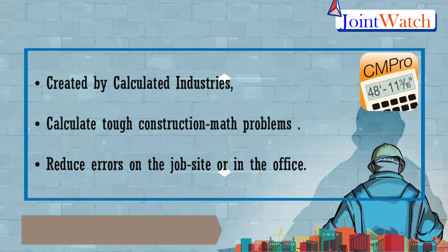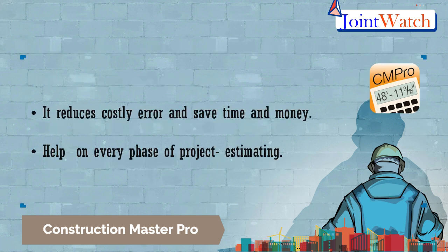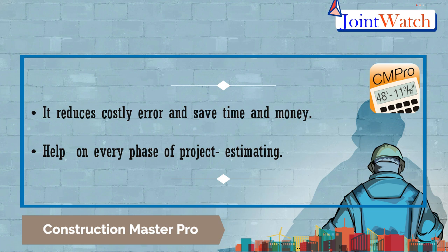The fourth is Construction Master Pro. Created by Calculated Industries, the originator of award-winning Construction Master calculators, it lets you calculate tough construction math problems and reduce errors on the job site or in the office. It reduces costly errors and saves time and money. Features include full trigonometric functions, built-in solutions for completing layouts, plans, and estimates, as well as built-in right-angle functions to simplify square-ups, rafters, slopes, and more.